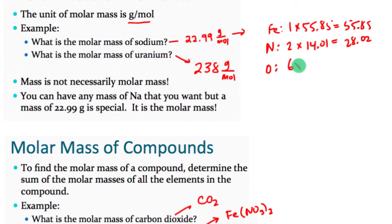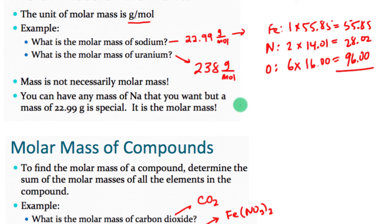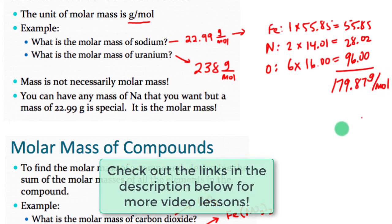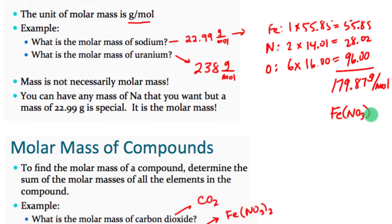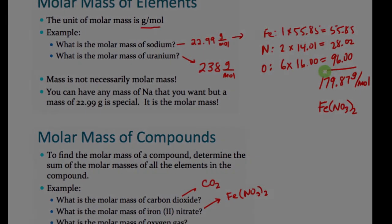For oxygen, there are a total of six atoms times 16, giving 96 for oxygen. There are also two nitrogen atoms at 14.01 each, giving 28.02. Adding iron (55.85), nitrogen (28.02), and oxygen (96) gives a molar mass of 179.87 grams per mole for iron(II) nitrate. For compounds, we just add up all the elements to get the total mass per mole.